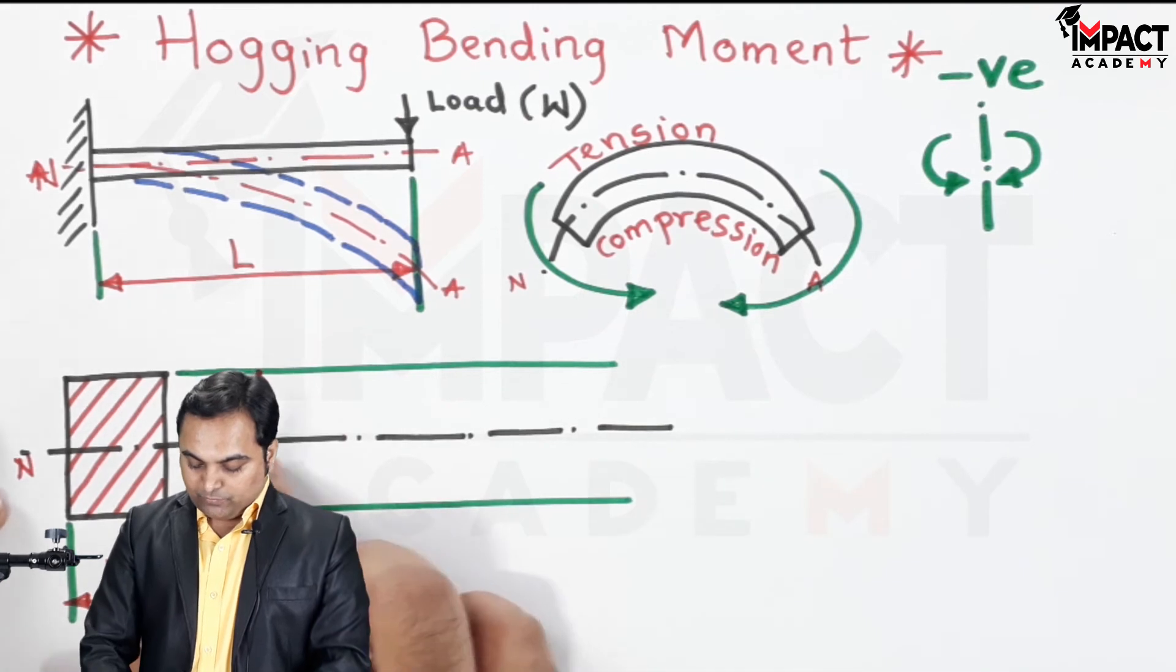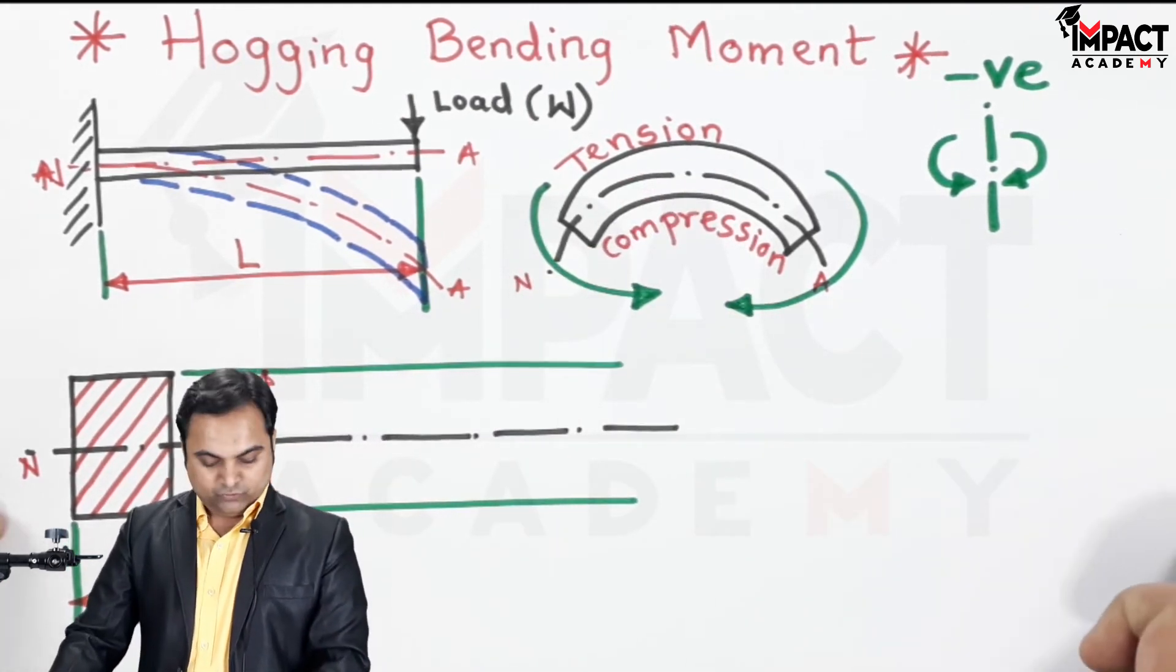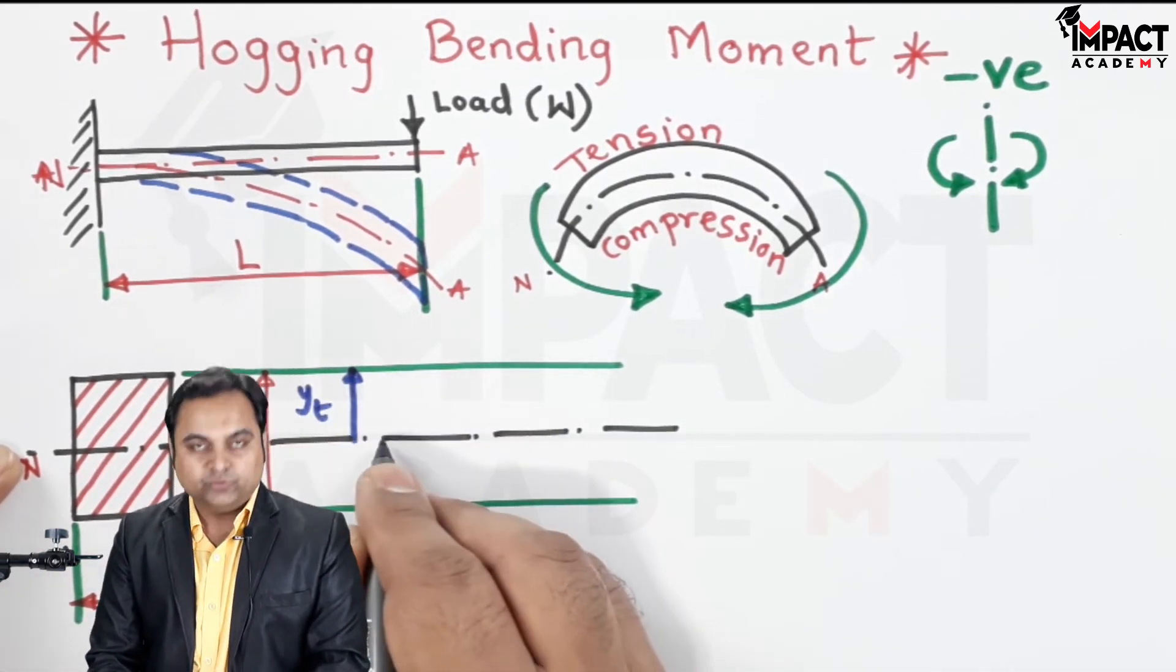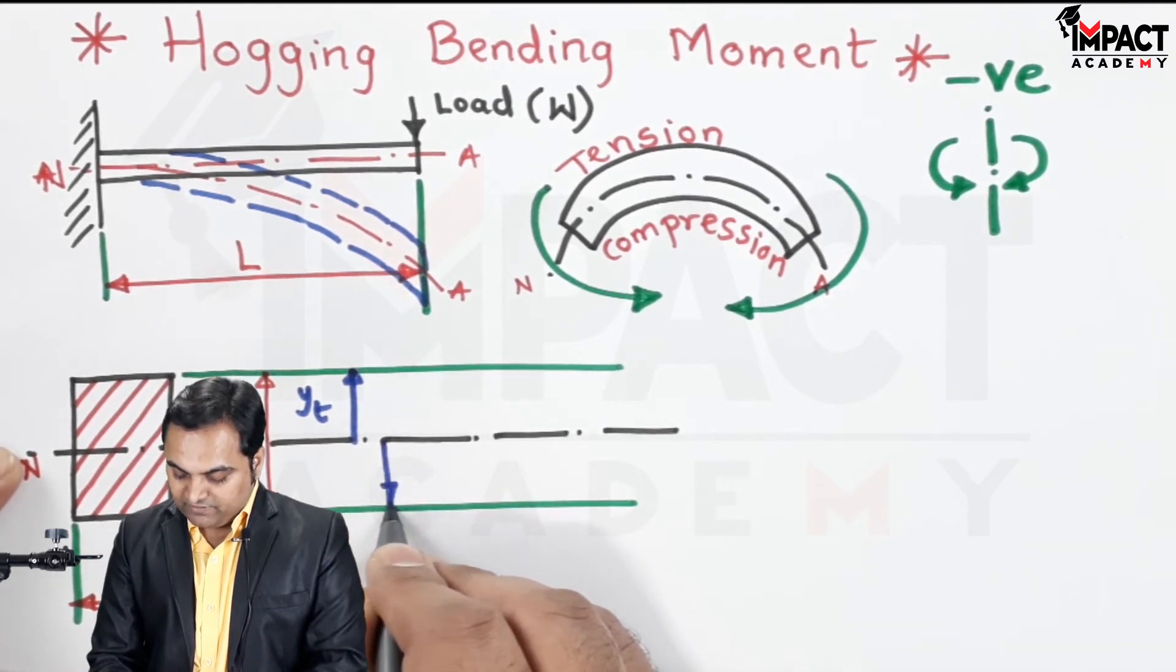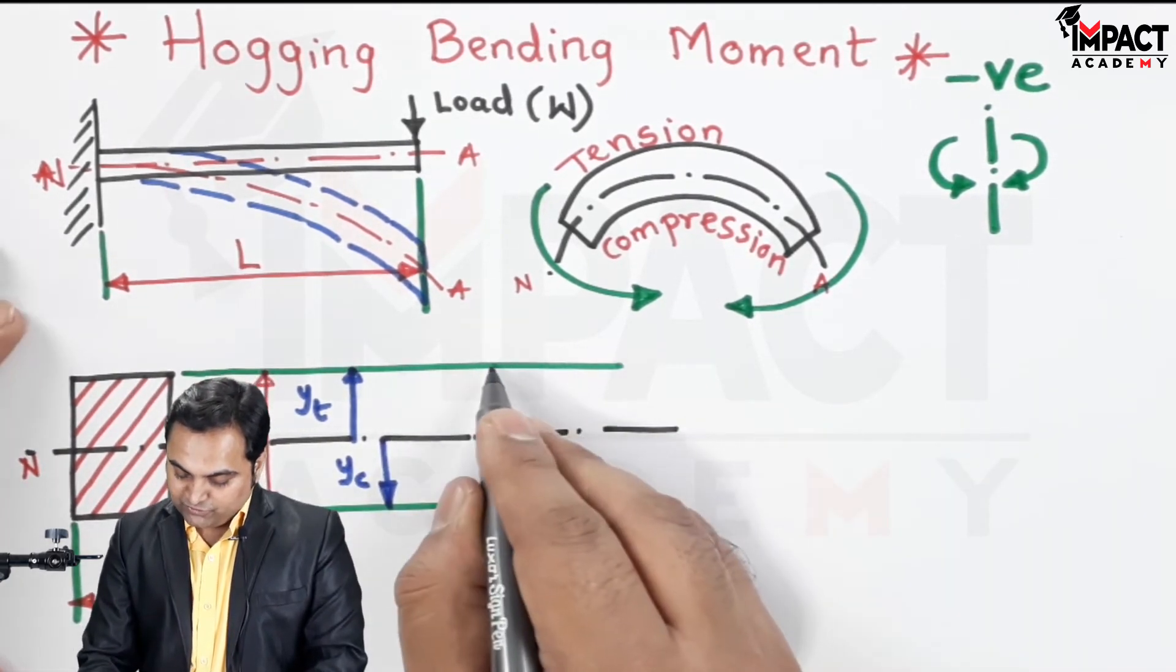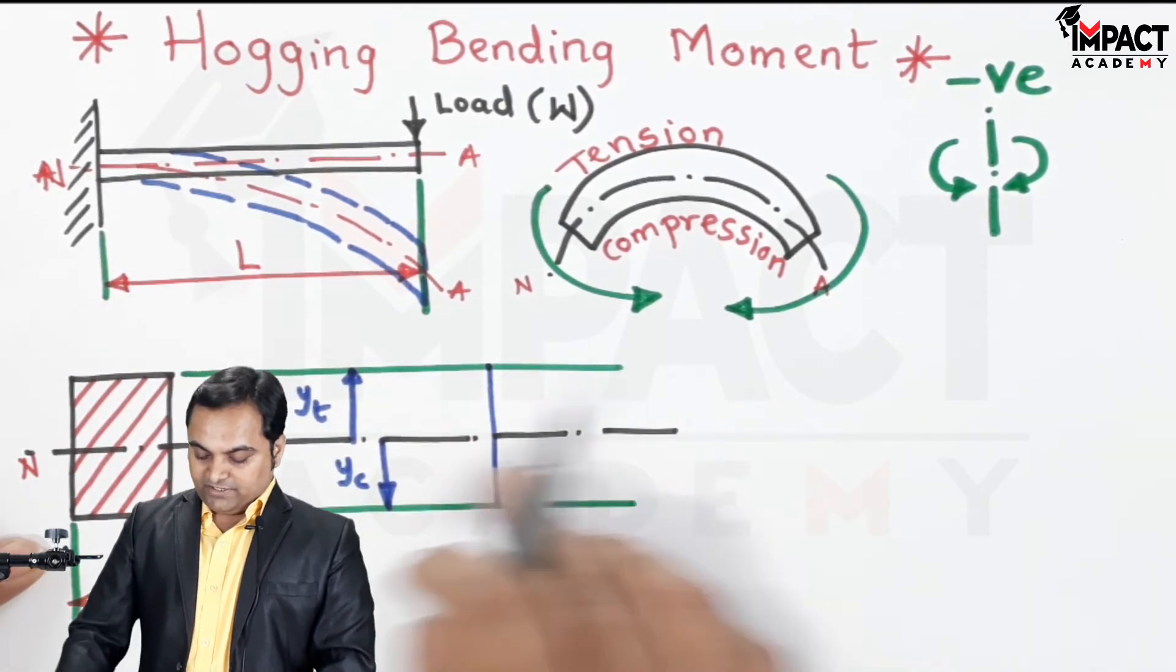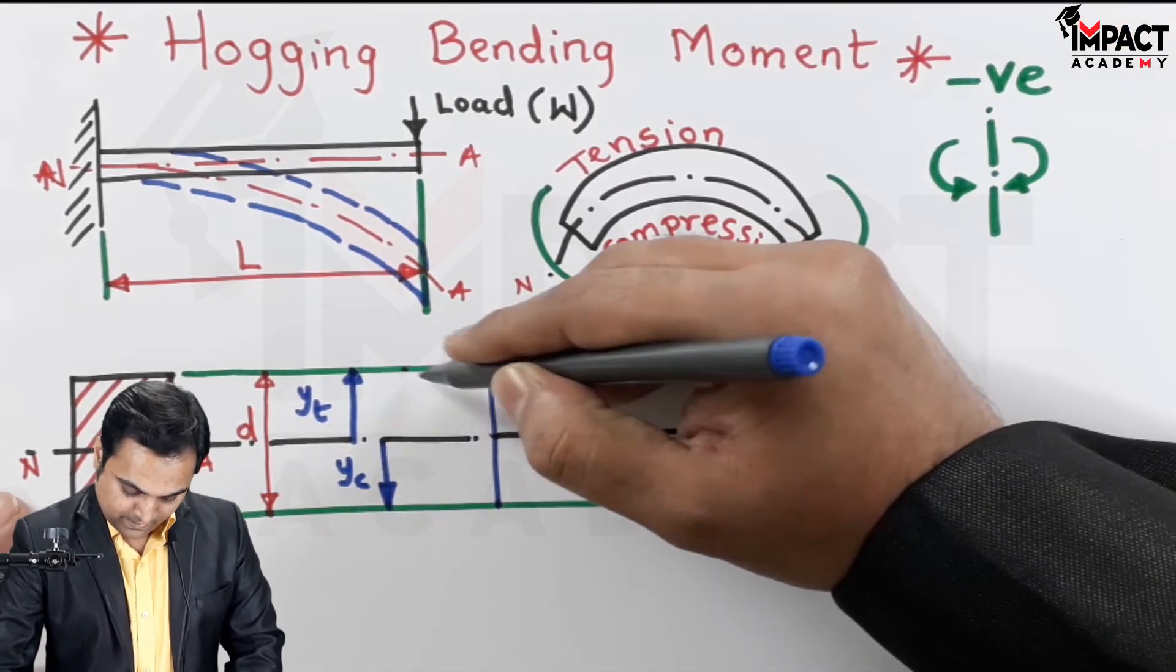As we see from the neutral axis up to the top, the layers are in tension so denoted by y suffix t. And from the neutral axis to the bottom, subjected to compression, so denoted by y suffix c. And so the bending stress distribution diagram is in this way, like here we have tensile stress at the top.